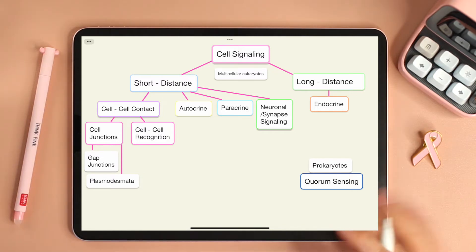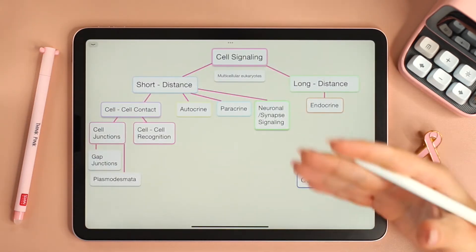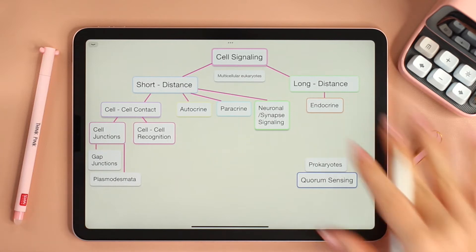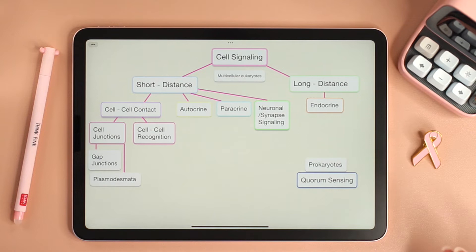Cell signaling is cell communication where cells communicate with one another by sending and receiving signals. This video and the next few will introduce the different ways cells communicate, after which we will look closely at what happens once the cells receive the signals.